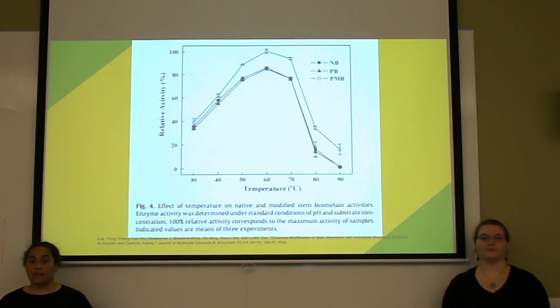The thermal stability of the modified and native forms of bromelain are due to the presence of cysteine residues in the polypeptide chain.